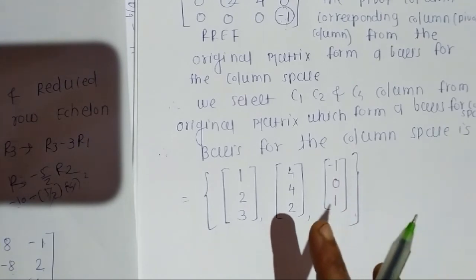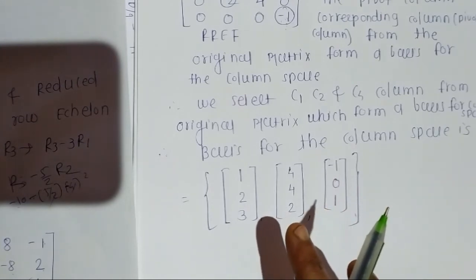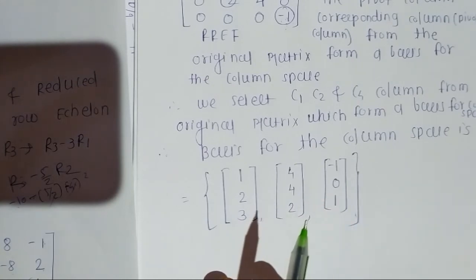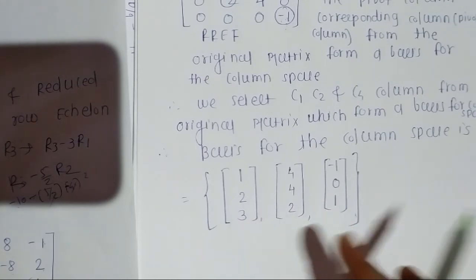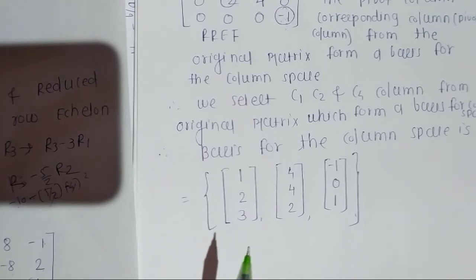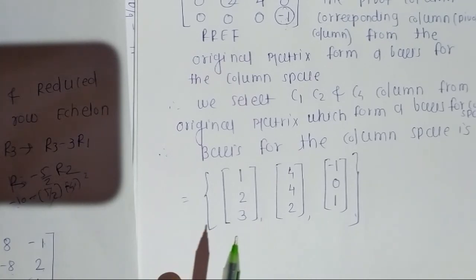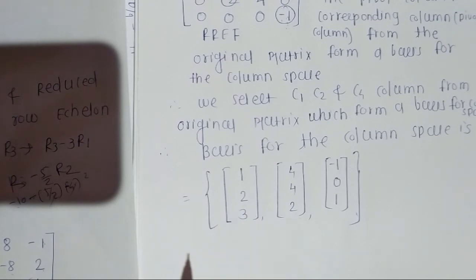In summary: reduce the given matrix to Reduced Row Echelon Form, identify the column numbers that contain pivot elements, and the same columns from the original matrix represent a basis for the column space. This is how we find the basis for the column space of any given matrix.